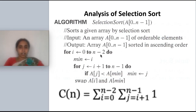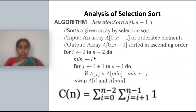So the analysis of selection sort: for i equal to 0 to n minus 2, minimum is set to the i-th index. Minimum is acting as the index. Then for j equal to i plus 1 to n minus 1, you are comparing.